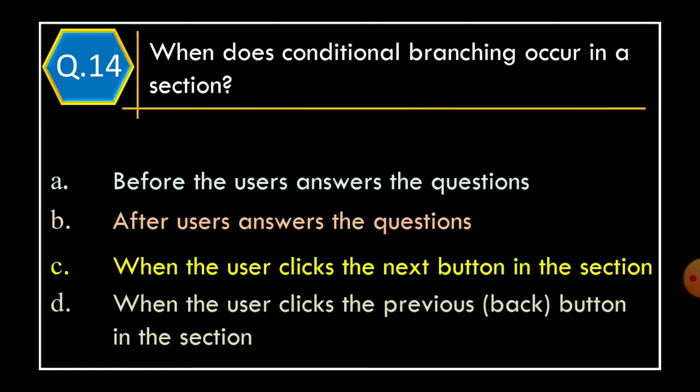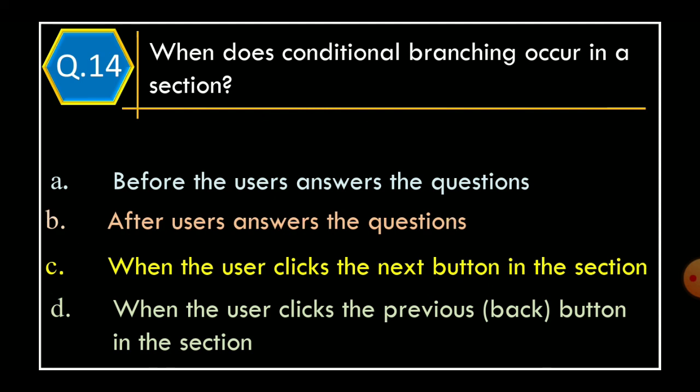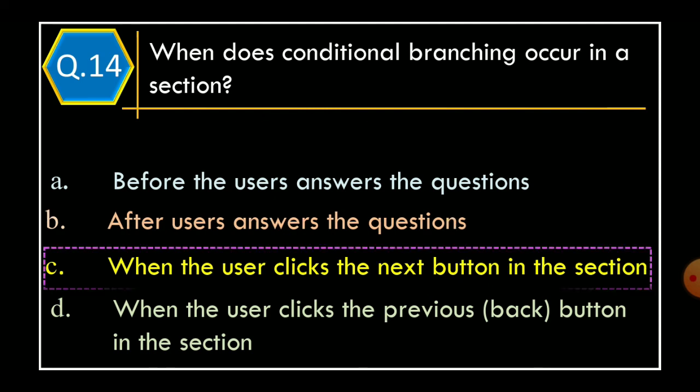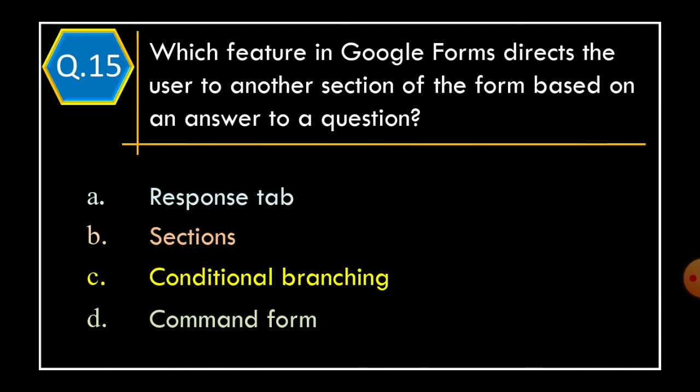Question 14. When does conditional branching occur in a section? Option A, Before the users answer the question; Option B, After users answer the question; Option C, When the user clicks the Next button in the section; Option D, When the user clicks the Previous/Back button in the section. And the correct option is Option C, when the user clicks the Next button in the section.